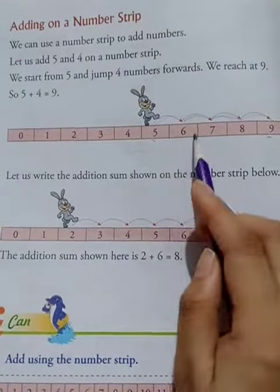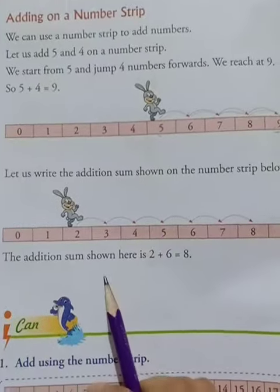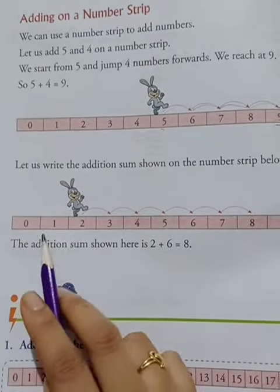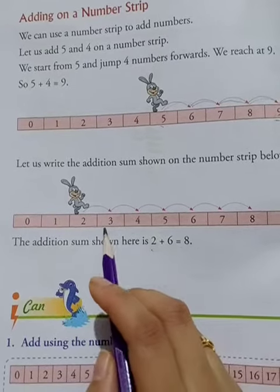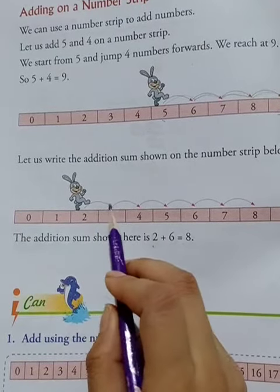Five plus four equals nine. Next, two plus six equals eight. Starting at two, we jump six numbers forward.